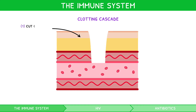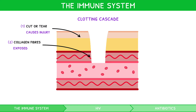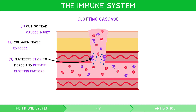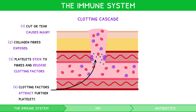A cut or tear to the skin causes injury to an underlying blood vessel, exposing collagen fibres. Platelets within the blood stick to these fibres, releasing chemicals known as clotting factors. These are procoagulant, i.e. they attract further platelets to the site of injury, forming an emergency barrier to prevent blood loss.